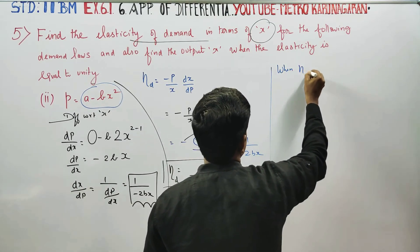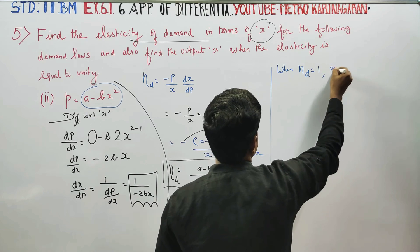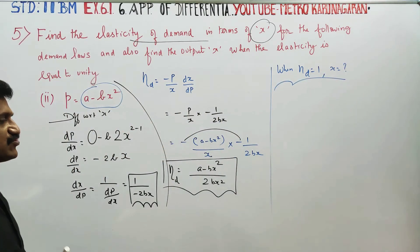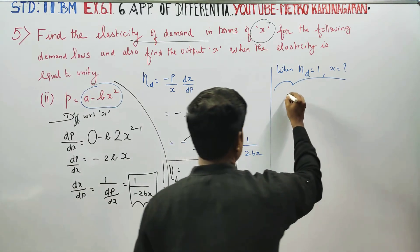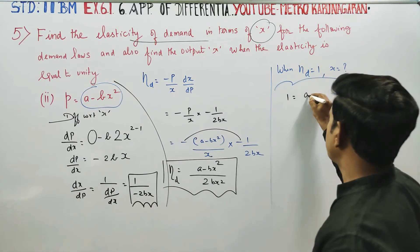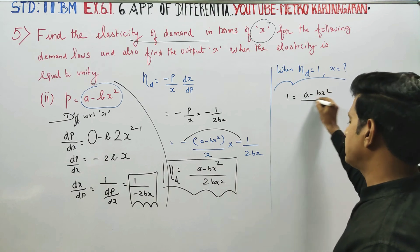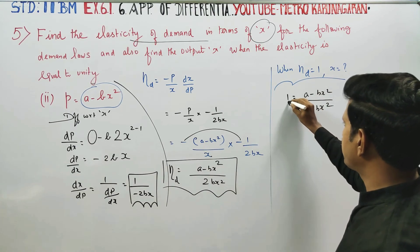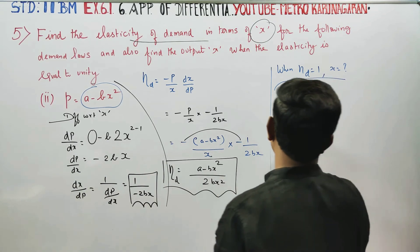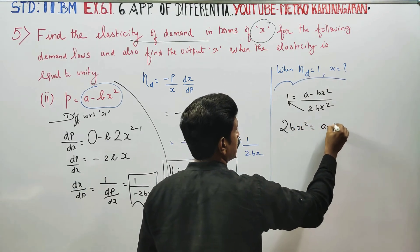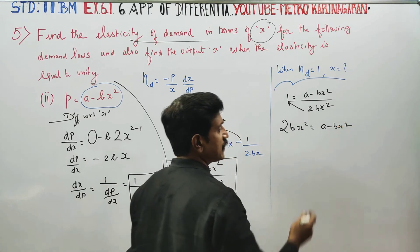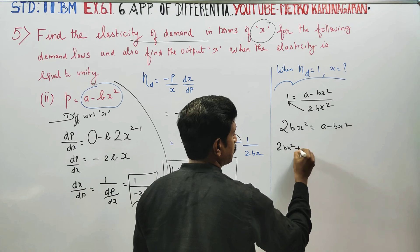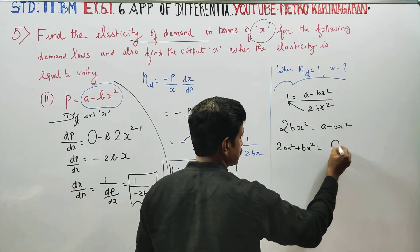When elasticity of demand is equal to 1, substitute x equals 1. So 1 is equal to A minus Bx square, by 2Bx square. Cross multiply: 1 into 2Bx square equals A minus Bx square. So 2Bx square plus Bx square is equal to A.